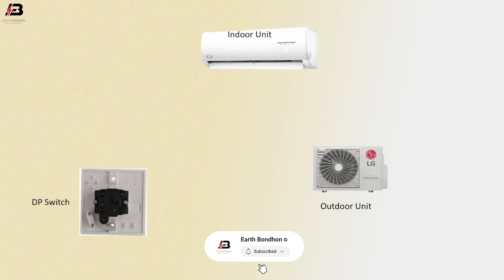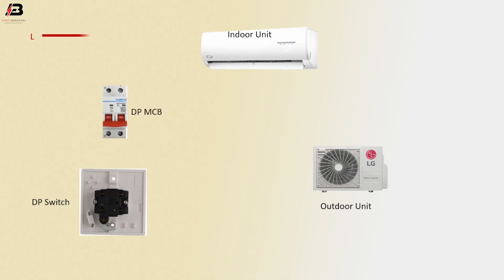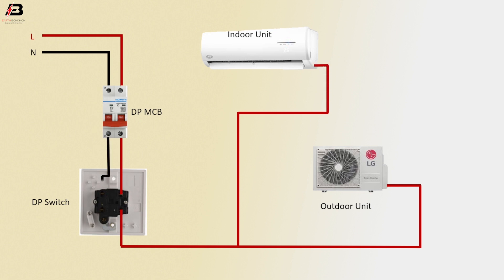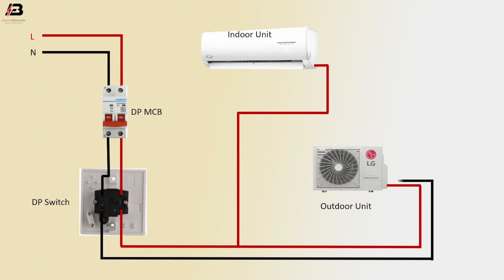Double pull MCB circuit breaker: phase connection to the double pull MCB circuit breaker, neutral connection to the double pull MCB circuit breaker. Phase connection from MCB to double pull switch. Phase connection from double pull switch to connect outdoor unit and indoor unit. Neutral connection from MCB to double pull switch, neutral connection from double pull switch to connect outdoor unit and indoor unit.